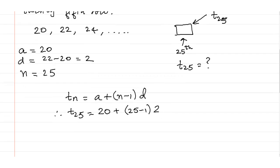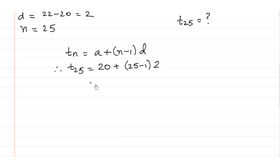Therefore this is equal to 20 plus 24 multiplied by 2, which is equal to 20 plus 48, which is equal to 68. So there are 68 seats in the 25th row. This is the answer.